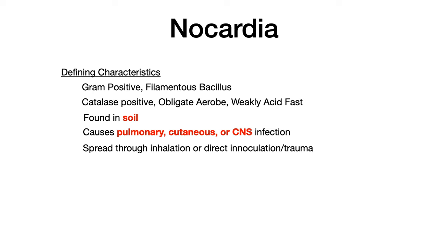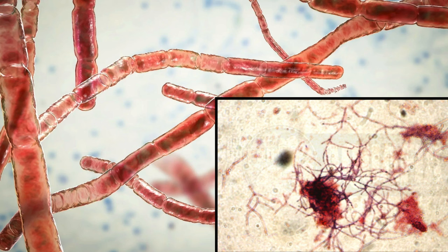Nocardia is spread through inhalation or direct inoculation/trauma — either breathing in the bacteria, or the bacteria directly inoculating an open or existing wound. Here's an image of that filamentous or branching quality in nocardia. You can see it almost looks like a fungus, which is pretty unique and characteristic of nocardia.